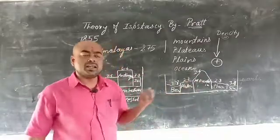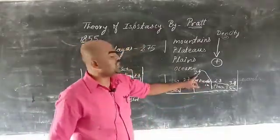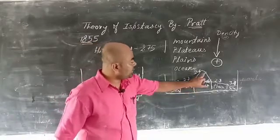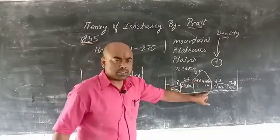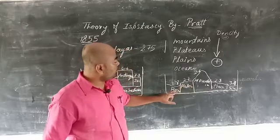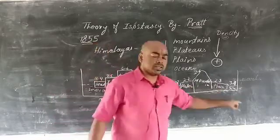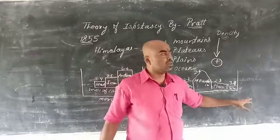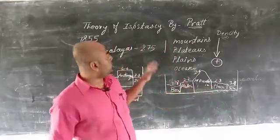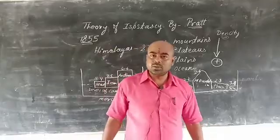Applying this to landforms: mountains, which have the lowest density of 2.6, are at the highest elevation; plateaus have a density of 2.7; plains and basins have 2.8; and the sea floor has the highest density. So Pratt's theory relates density to the height of landforms in the concept of isostasy.